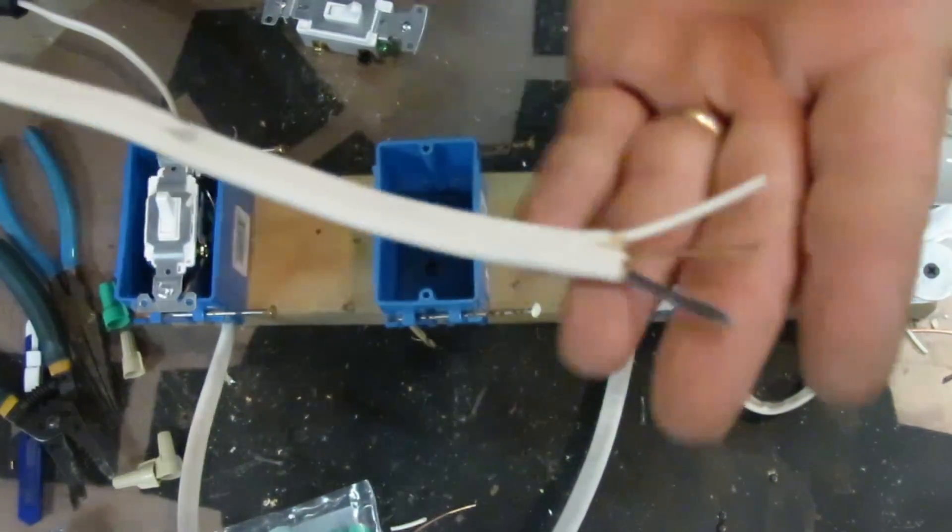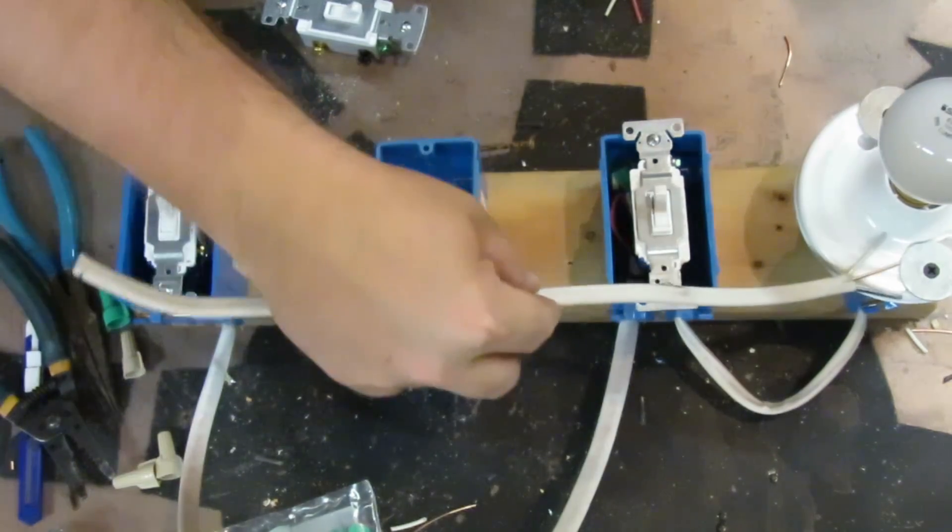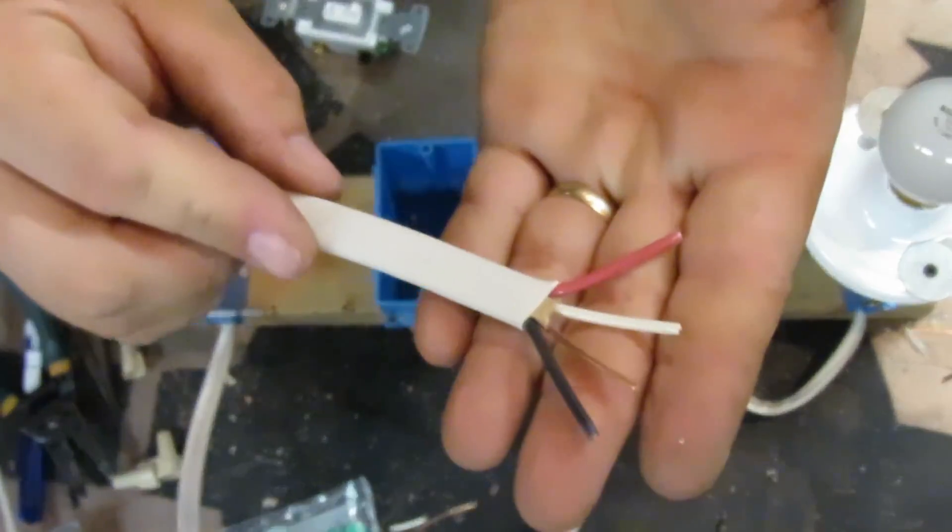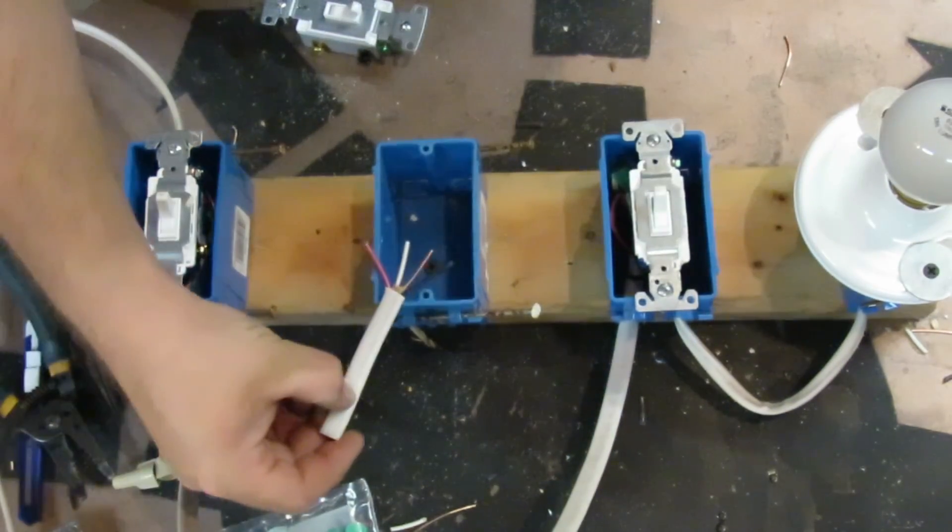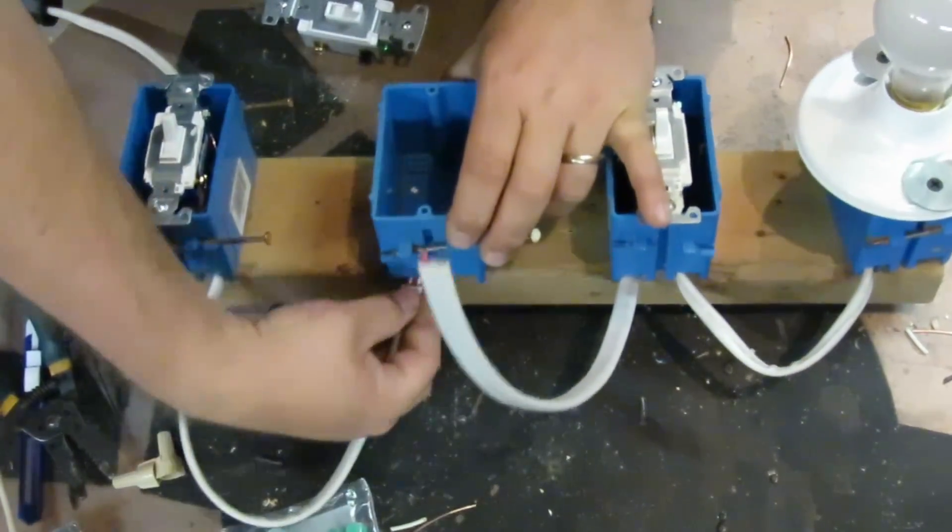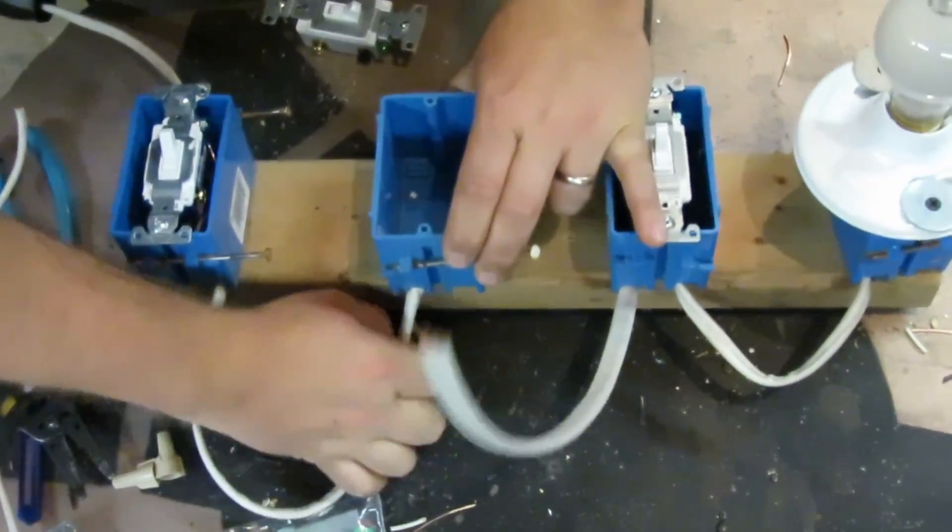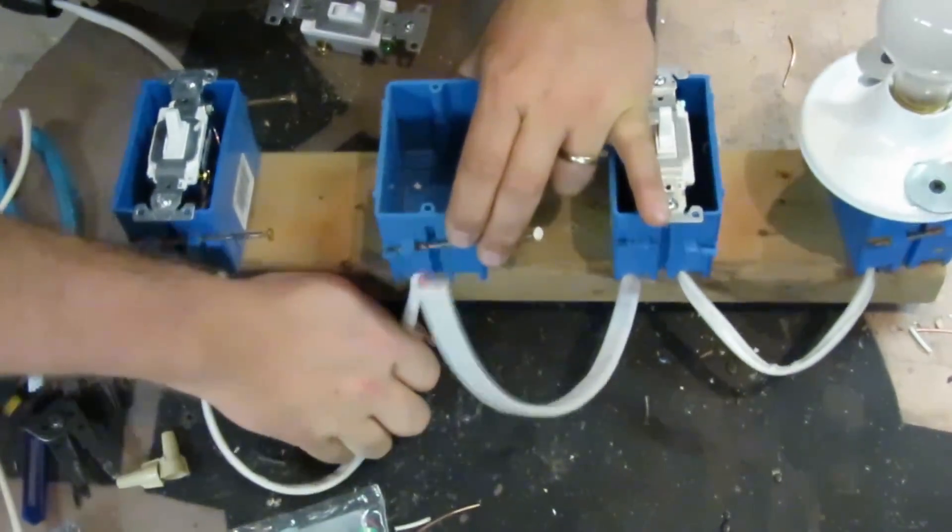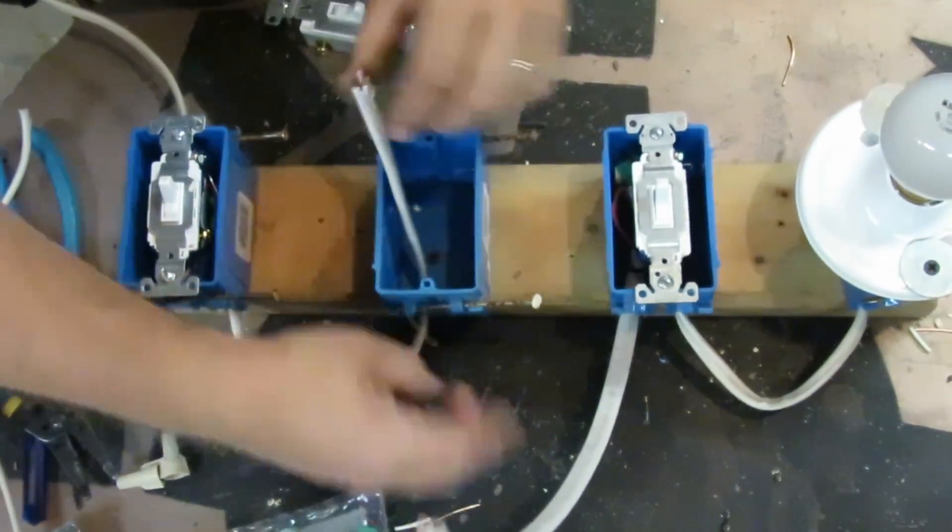This is a piece of 14-2 wire, and it goes for the power and the switch line. This is 14-3, and this is going to go between the switches. The difference between the 14-2 and the 14-3 is that the 14-3 has an extra conductor—it has the red wire.